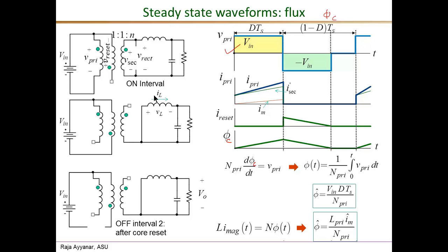All of this analysis has been for the 1:1 turns ratio between N_primary and N_reset. With this ratio, D equals 0.5 is the maximum duty ratio: allowing D greater than 0.5 means V_in is applied for more than half the period, making it impossible to reset the core — V_primary average cannot be zero and phi_c cannot return to its initial value before the next cycle begins. In the next part of this analysis video we will consider the case of arbitrary turns ratio between N_primary and N_reset and derive an expression for D_max under that general condition.